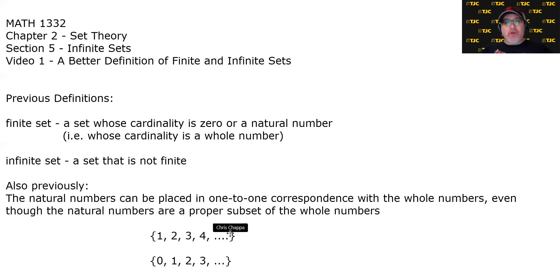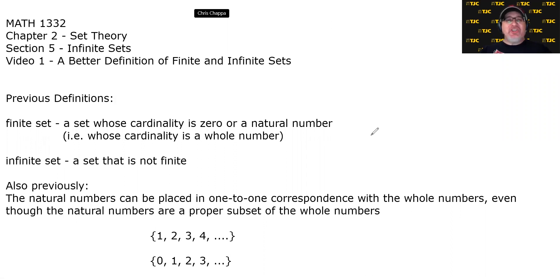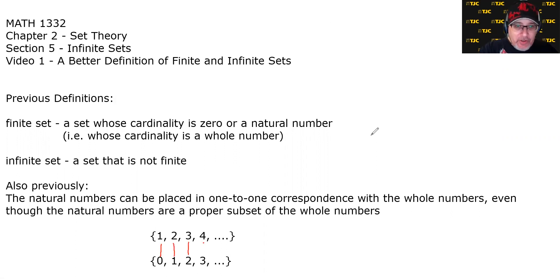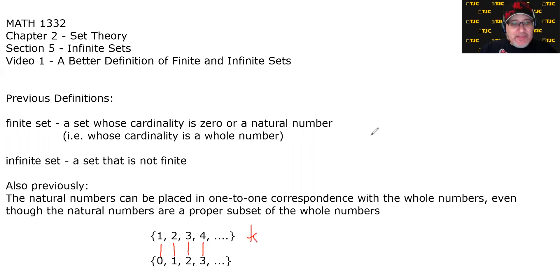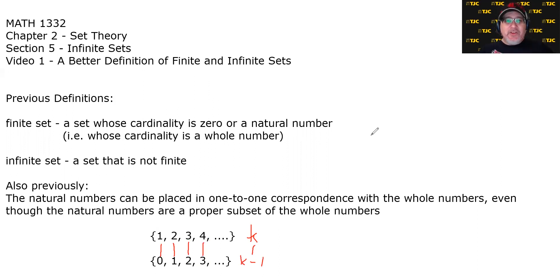Specifically, the natural numbers 1, 2, 3, 4 and the whole numbers 0, 1, 2, 3 can be put in one-to-one correspondence with each other. All it means to have a one-to-one correspondence is to match up each element of one set with an element of the other so that every element is paired with one and exactly one partner. We could pair 1 with 0, 2 with 1, 3 with 2, 4 with 3. For a generic element K, it pairs with K minus one. This implies these sets have the same size — everybody has a partner and nobody's left out.